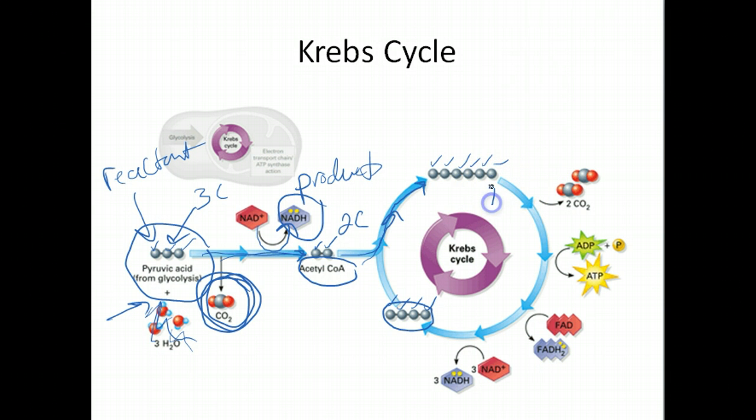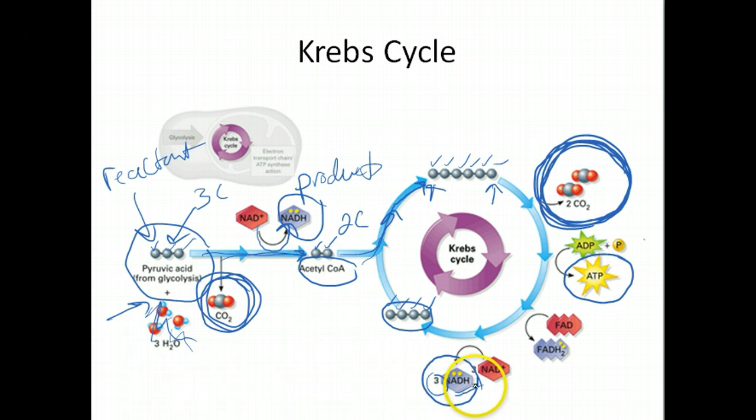So that means that you lose two of these carbons at some point. Take a guess how you lose them. You lose them as carbon dioxide. Remember that big waste product that we exhale when we're creating energy. So you lose carbon as carbon dioxide. And then along the way, just as in glycolysis, you're going to make a little bit of ATP, you're going to make a little bit of NADH, actually a lot more. In this case, you make three, but I don't need you to know about the numbers so much. You make a lot, you make a considerable amount of NADH, and then you make this new electron carrier full of electrons and it's called FADH2.